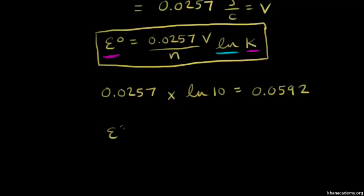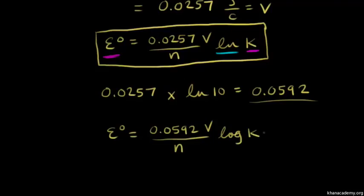Now we have the standard cell potential, E zero, is equal to 0.0592 volts, once again over N, the number of moles of electrons transferred in our redox reaction. And this time it would be times the log of K, not the natural log. We've taken care of that in our calculations.